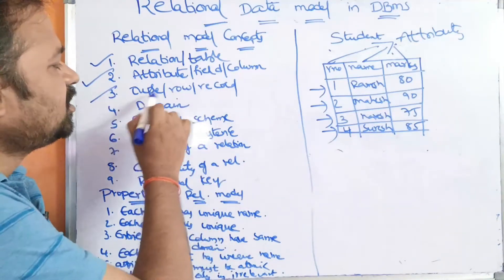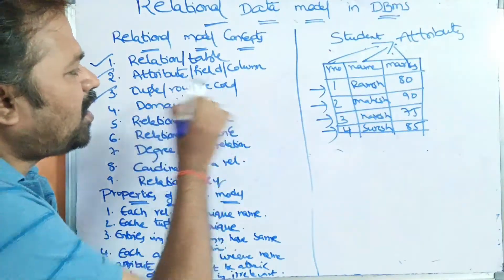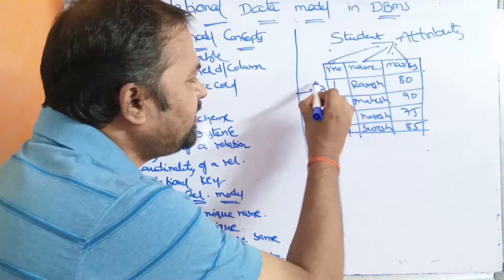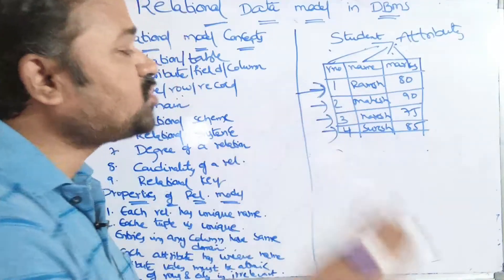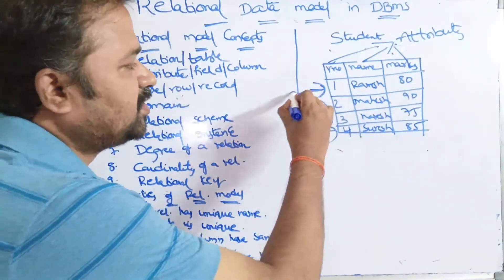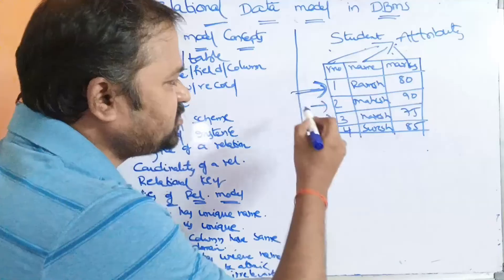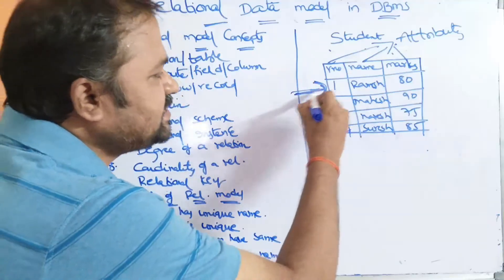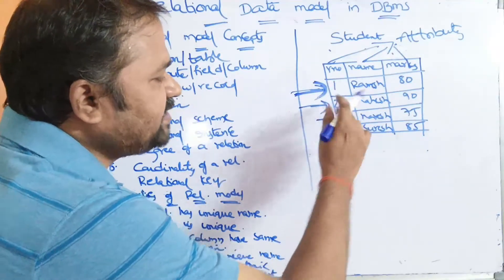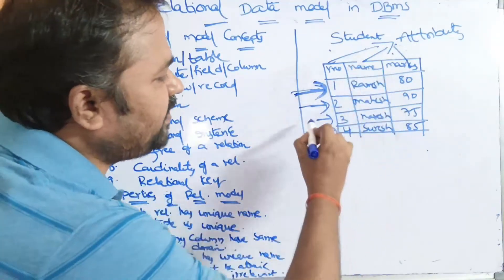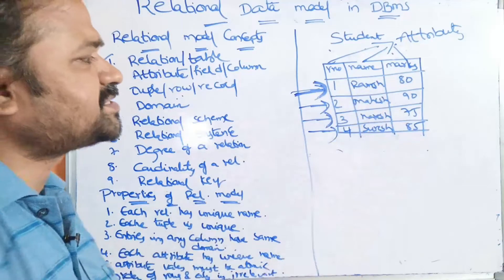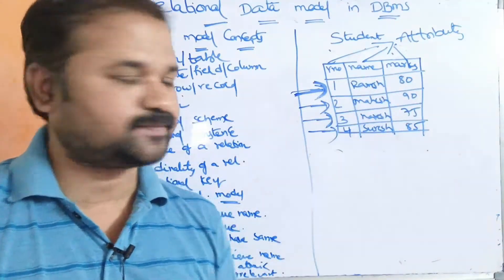The next terminology is tuple, row, or record. A tuple is nothing but rows of a table or records of a table. This is the first tuple, first row, first record. Likewise, in this table we have four tuples, or four records, or four rows.